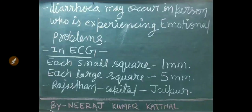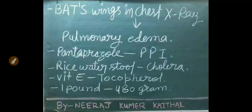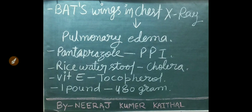Florence Nightingale was born in Italy. In ECG, each small square equals 1 mm and each large square equals 5 mm. The capital of Rajasthan is Jaipur. Bat's wing appearance seen on chest X-ray denotes pulmonary edema.